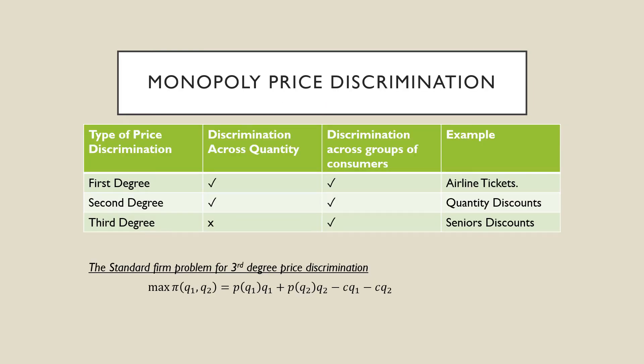Let's move on to price discrimination. In general, we're exposed to three different types of price discrimination: first degree, second degree, and third degree. First degree price discrimination discriminates across quantity and across groups of consumers. Second degree price discrimination only discriminates across quantity, while third degree price discrimination discriminates across groups. The standard problem for third degree price discrimination is where our producer is choosing to maximize their profits with reference to the quantity sold in each market, and our producer is able to separate these markets.